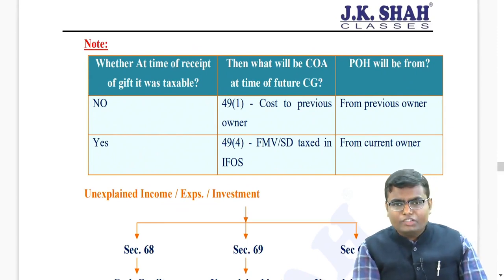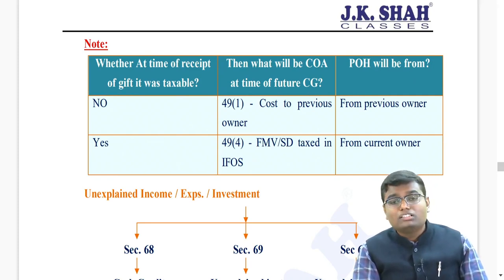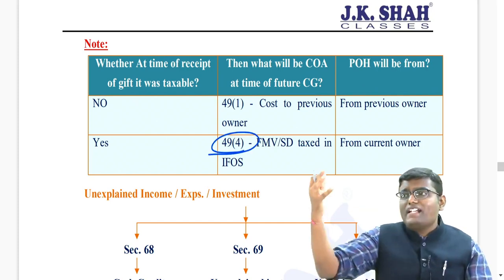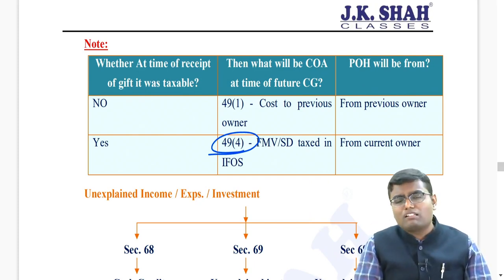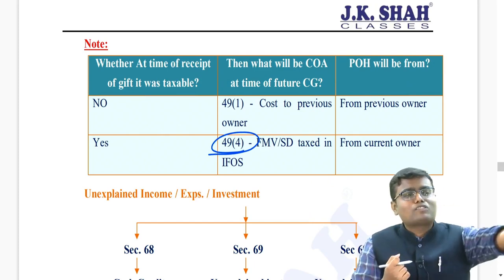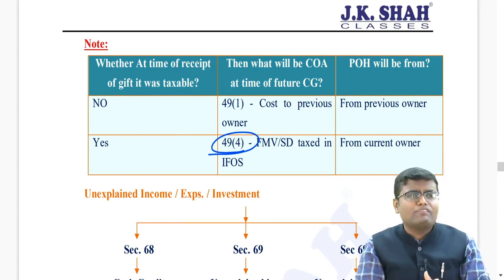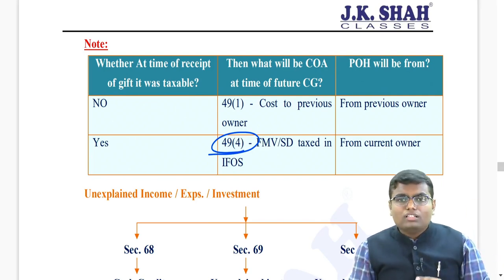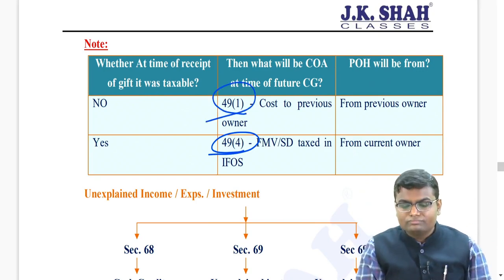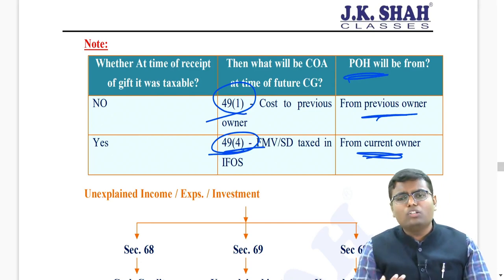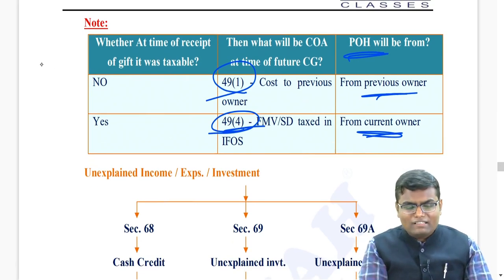One more important point linked to the gift income topic - if at the time of receipt of any gift it is taxable to you, then while selling that particular property in the future, the cost of acquisition will not be the cost of the previous owner. It will be the fair market value or stamp duty which you took while computing IFOS income - that is written under section 49 subsection 4. So if I receive a gift from a non-relative, I pay tax in IFOS on the fair market value or stamp duty, and then that fair market value or stamp duty becomes my cost of acquisition for future capital gain. However, if at the time of receipt the gift was not taxable - because received at the time of marriage or from a relative - and I sell it in the future, then the cost of the previous owner becomes my cost of acquisition under section 49(1). If applying section 49(1), period of holding is from the previous owner; if applying section 49(4), period of holding is from you as the current owner.